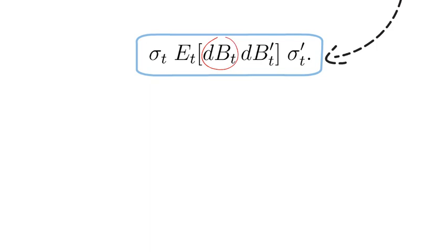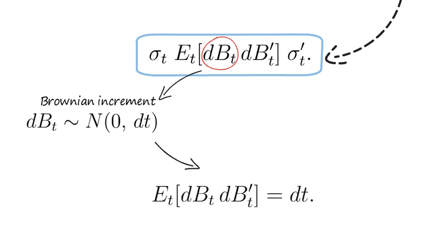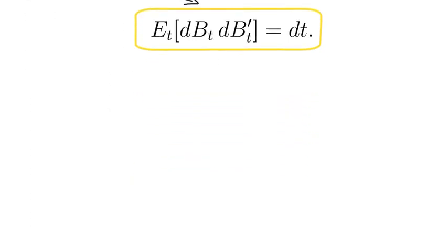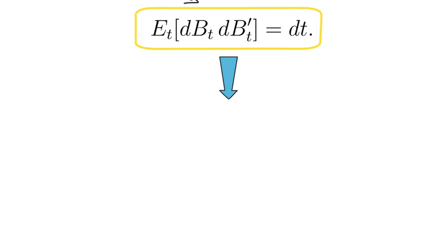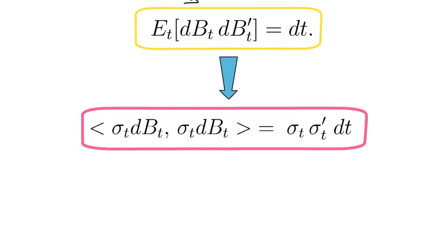As dB_t is a Gaussian distribution that has a mean of 0 and a variance of dt, it's clear that the conditional expectation of dB_t times dB_t transpose is simply dt. Hence the instantaneous covariance simplifies to sigma_t times sigma_t transpose dt, which we can also write as capital Sigma_t dt, where capital Sigma_t is the instantaneous covariance matrix.